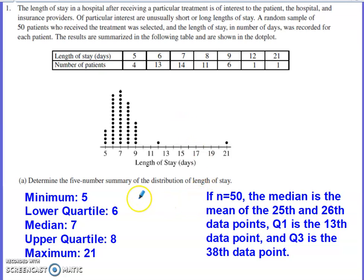So in part A, we're asked to determine the five-number summary for the distribution of length of stay. Five-number summary are the five values that you need to have in order to build a box plot. They don't ask us to build the box plot here, they just ask us for the five values that we would need to have access to in order to actually construct it.